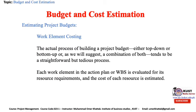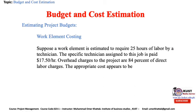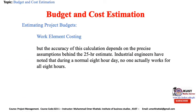Work element costing is the actual process of building a project budget — whether top-down, bottom-up, or a combination of both — and tends to be a straightforward but tedious process. Each work element in the action plan or WBS is evaluated for its resource requirements and the cost of each resource is estimated. For example, suppose a work element is estimated to require 25 hours of labor by a technician paid $17.50 an hour, and overhead charges to the project are 84% of direct labor charges. The appropriate cost would be: 25 hours × $17.50 × 1.84 = $805.